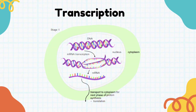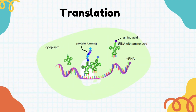Once that has been completed, the mRNA moves out of the nucleus through the nuclear pore into the cytoplasm, where it will attach to a ribosome. That is the end of transcription. The key point is that transcription is where the mRNA is formed.